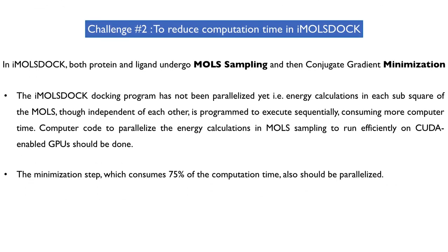The second challenge is to reduce the computation time in IMALS DOG. In IMALS DOG, both the protein and the ligand undergo MLS sampling and then conjugate gradient minimization. By parallelizing both the MLS sampling and the conjugate gradient minimization, we can easily reduce the computation time in IMALS DOG.